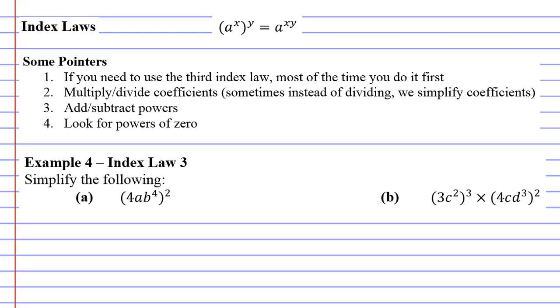Index laws example 4 now. This one focuses on index law 3, which in case you've forgotten is where you've got a set of brackets and a power outside the brackets. For this one you end up multiplying—so 2 times 4 is 8. When you have brackets you multiply the power.